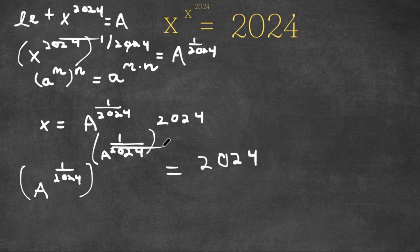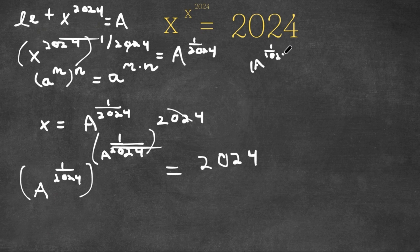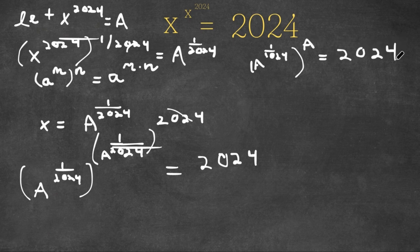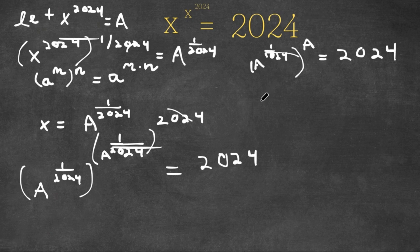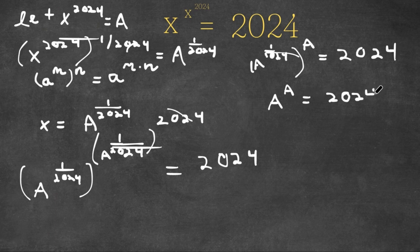2024 times 1 over 2024 cancel out and it's simply 1, so now we get a to the power of 1 over 2024, to the power of a, is equal to 2024. Now if I take the power of 2024 on both sides, these two cancel out and I simply get a to the power of a is equal to 2024 to the power of 2024.